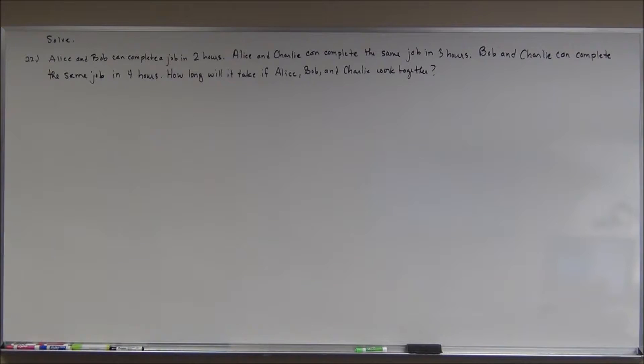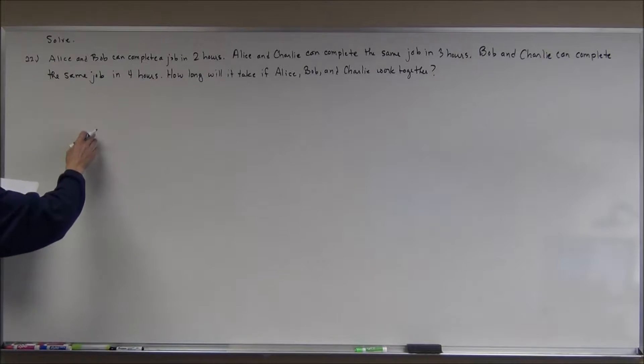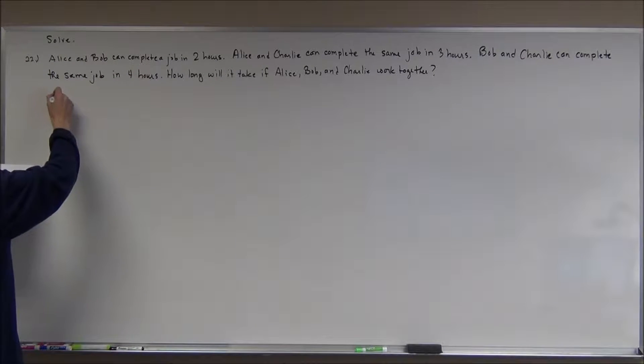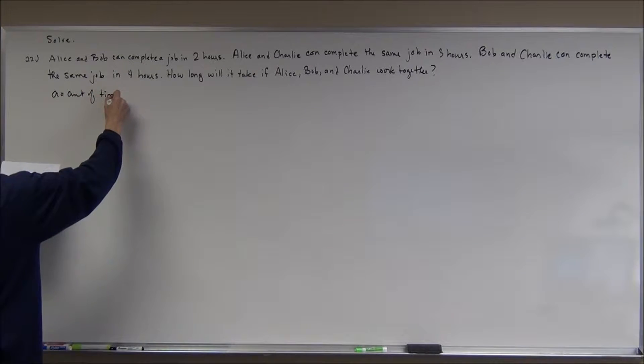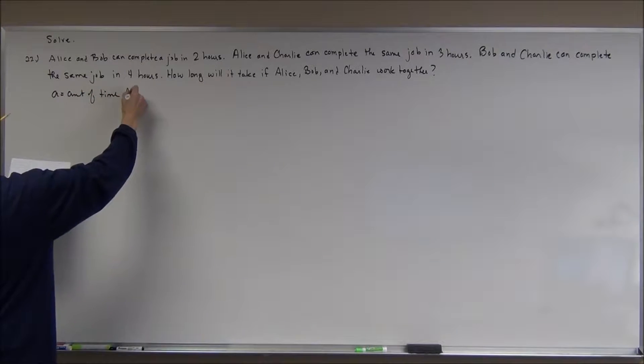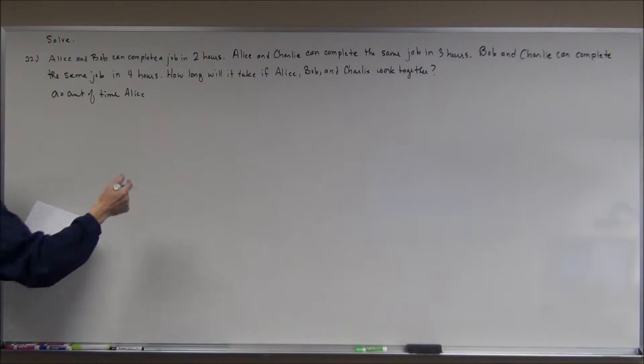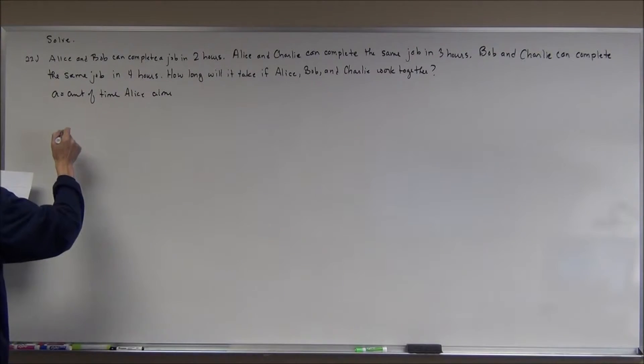So, what I'm going to do here is, because Alice, Bob and Charlie, A, B and C, I'm going to let A equal the amount of time Alice can get it done alone. Can get this job done, whatever it is.